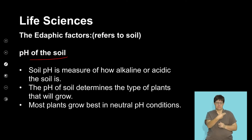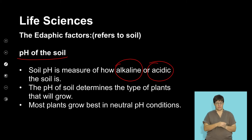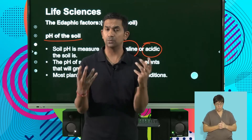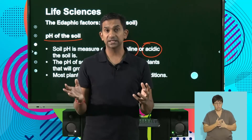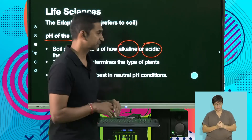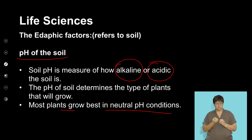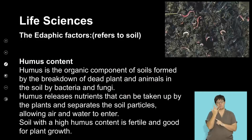Let's look at the pH of the soil. pH is generally a measure of how alkaline or acidic the soil is. The pH of the soil often determines the types of plants that grow there. We know that pH plays a significant role on enzyme functioning or how proteins carry out their function. Soil that is extremely acidic or extremely alkaline may not support the growth of plants or other organisms in them. Most plants grow best in a neutral pH or slightly alkaline or acid pH.